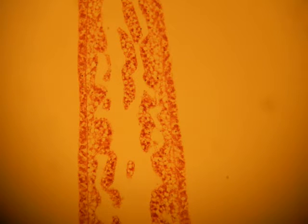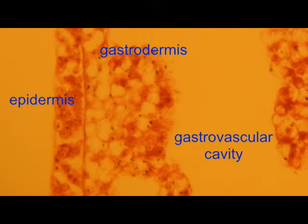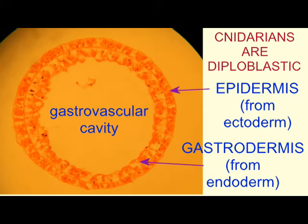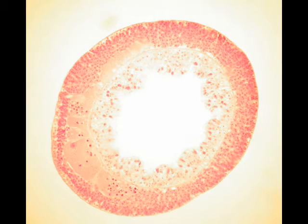Here, these cells have chosen a permanent fate and thus form tissues. In cnidarians, there are two different tissues: a tissue known as ectoderm, which develops into the epidermis and the nervous system, while the tissue known as endoderm develops into the gastrodermis, which surrounds the vascular cavity.